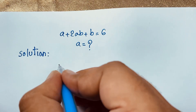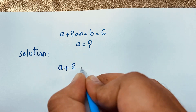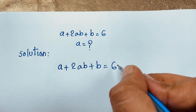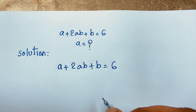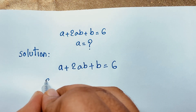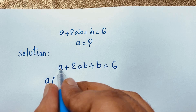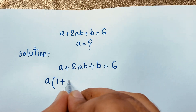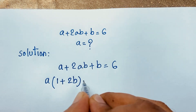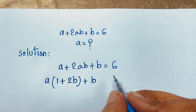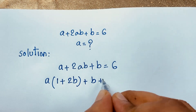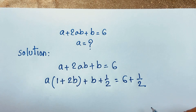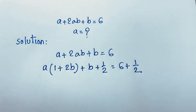So here a + 2ab + b = 6 is our question. Now, 'a' is common, so if I take 'a' as common: a(1 + 2b) + b. Then I add 1/2 to both sides, so we have 1/2 added to both sides, giving 6 + 1/2 on the right.